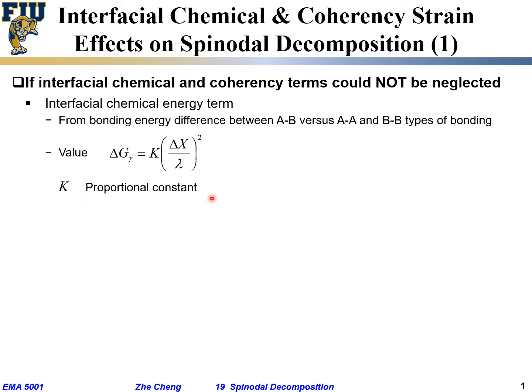The smaller the wavelength — or more frequent the compositional fluctuation — the larger this interfacial energy. Here, k is a proportional constant, treated as a constant for our discussion. Lambda is the wavelength of the so-called composition variation or compositional modulation — specifically the separation between the valley and the peak in the composition fluctuation.